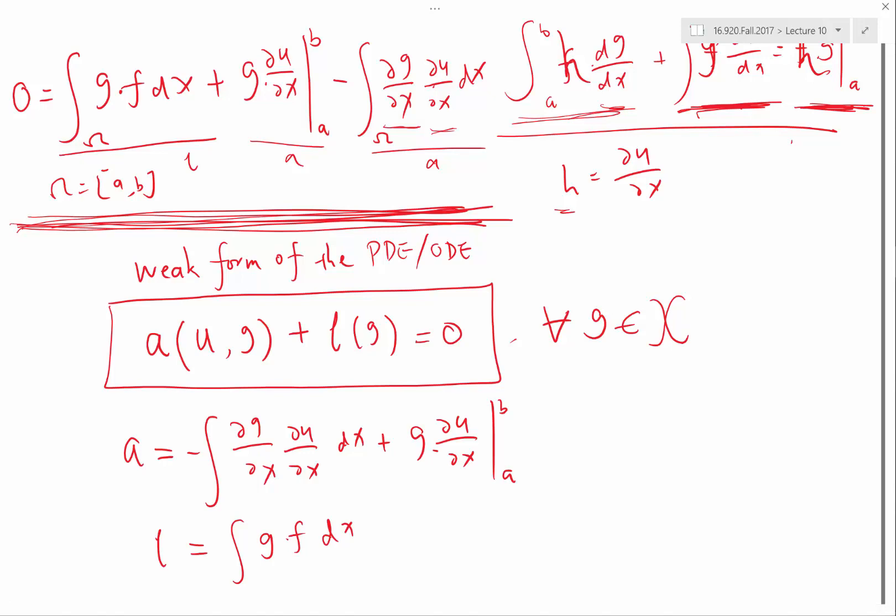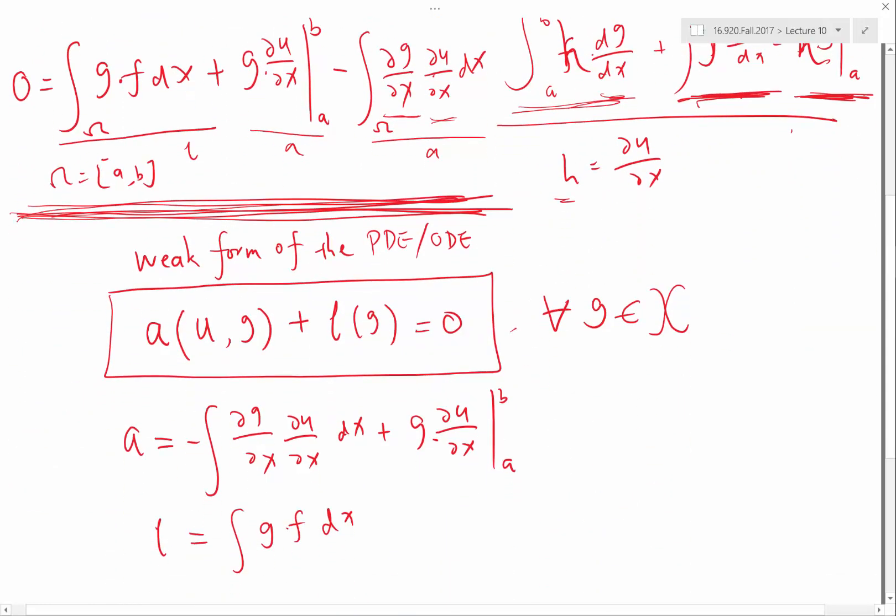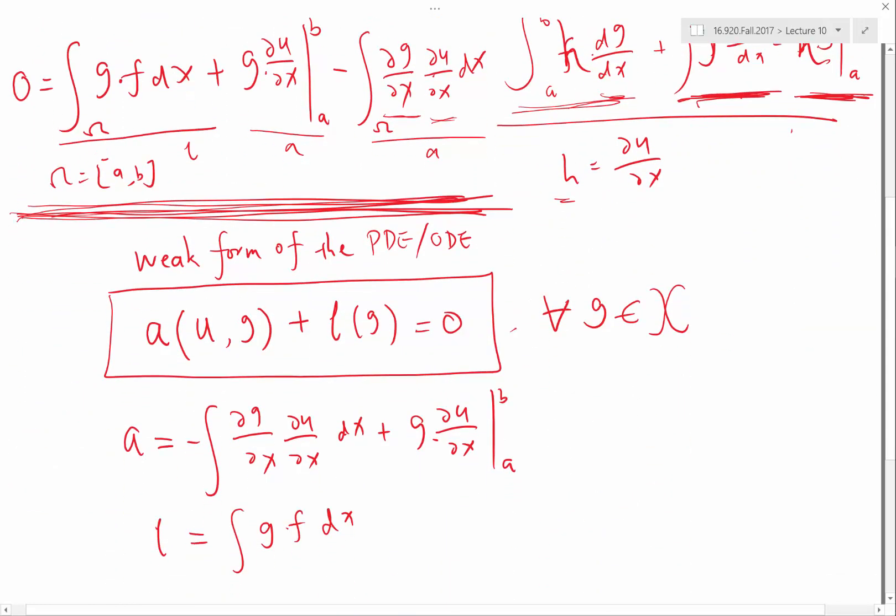So why do we do this? This is a weaker form of this differential equation, which requires the solution to be twice differentiable. Now, when we get to the weaker form, it no longer requires my solution to be twice differentiable. It only requires my solution to be differentiable once. So, this actually formally allows us to use the set of basis functions.